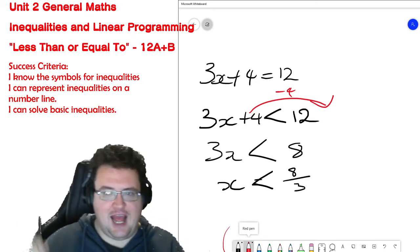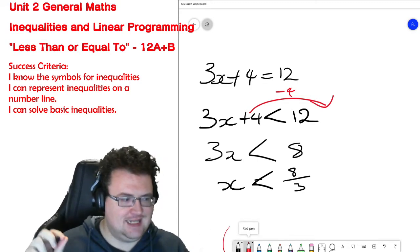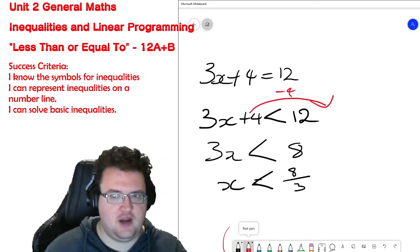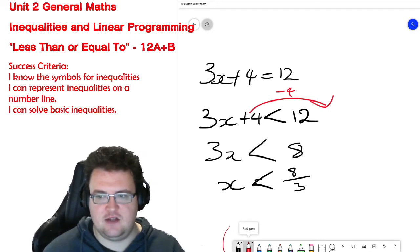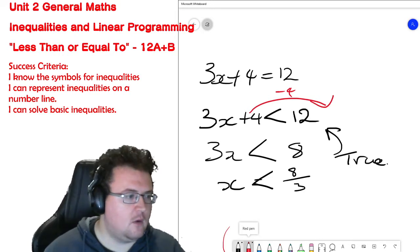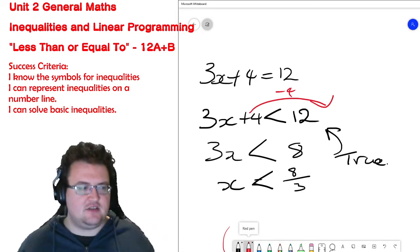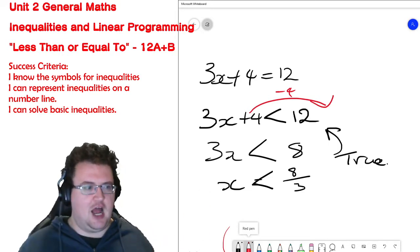So any value that is less than 8 over 3 means that this is true. What we're looking for is a series or an infinite series of answers that are true.